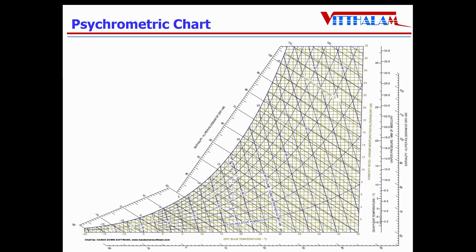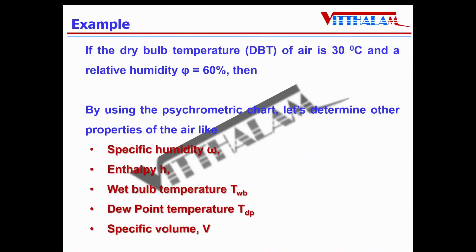Now let us understand how to read this chart with one example. If the dry bulb temperature of air is 30 degrees Celsius and the relative humidity is 60 percent, then by using the psychrometric chart, let us determine other properties of the air like specific humidity, enthalpy, wet bulb temperature, dew point temperature, and specific volume.